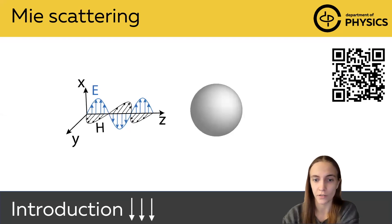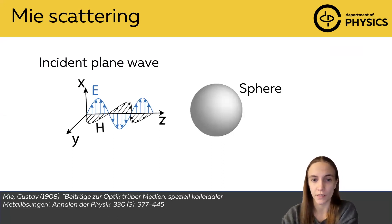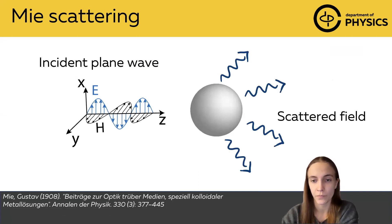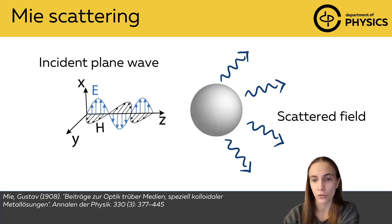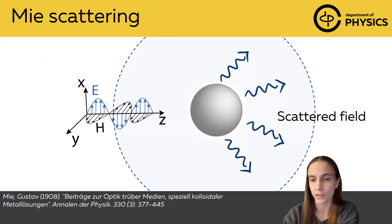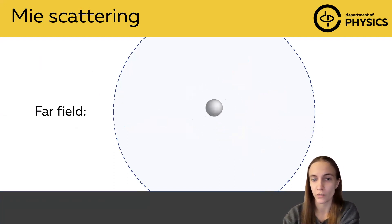Here we will just recall the main idea and main results of Mie theory. The Mie theory studies scattering of some incident plane wave by some sphere of any size of almost any material, and we will be interested in particular only in the scattered field — specifically the scattered field on the border of some big sphere around our particle, much bigger than the wavelength of our light. This is called far field.